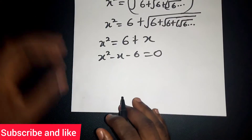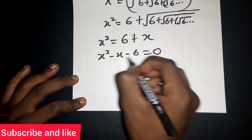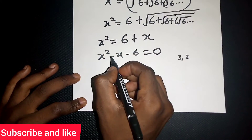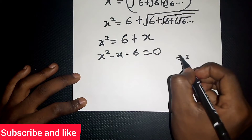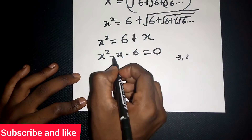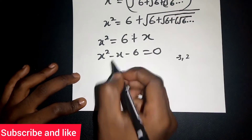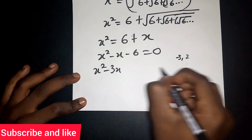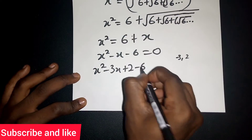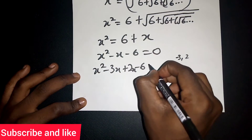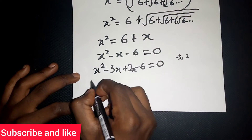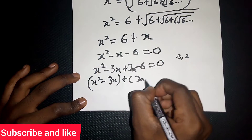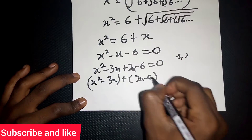Now we find two values whose product is negative 6 — which are 3 and 2 — and whose sum is negative 1. So we put the negative on 3: negative 3 plus 2 equals negative 1. We rewrite as x squared minus 3x plus 2x minus 6 equals zero.